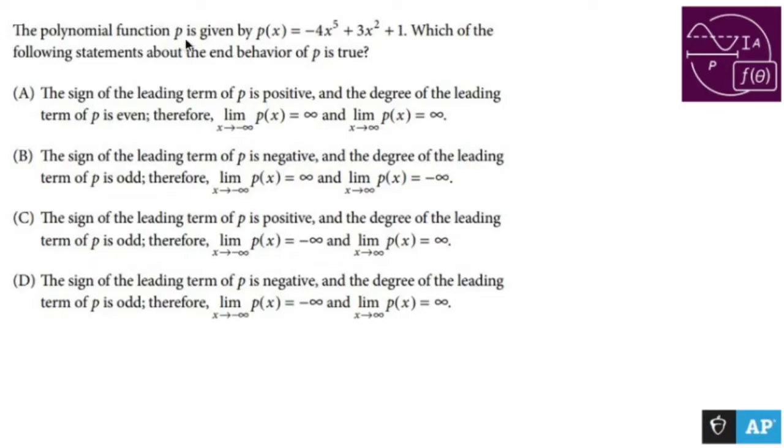The polynomial function p is given by p of x equals negative 4x to the 5th plus 3x squared plus 1. Which of the following statements about the end behavior of p is true?